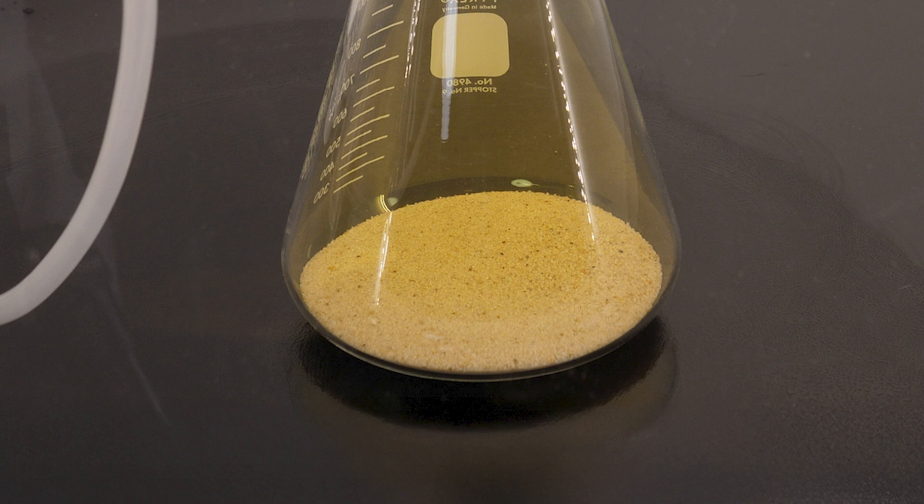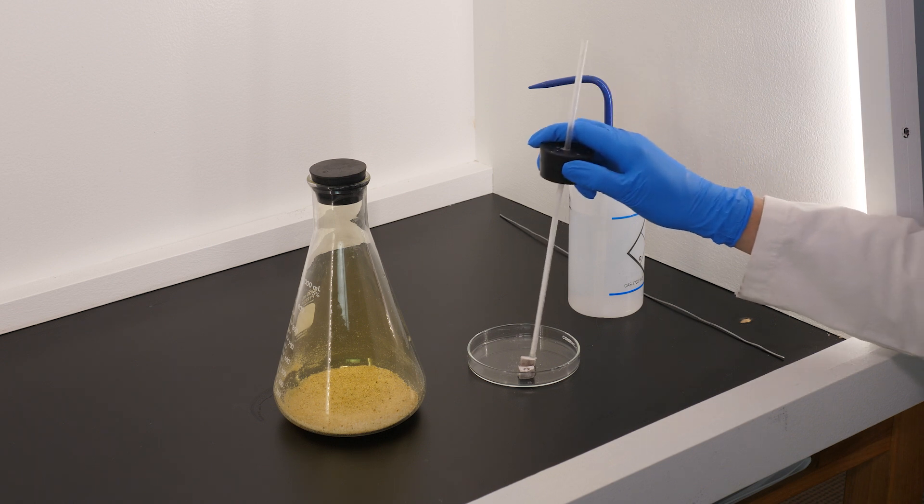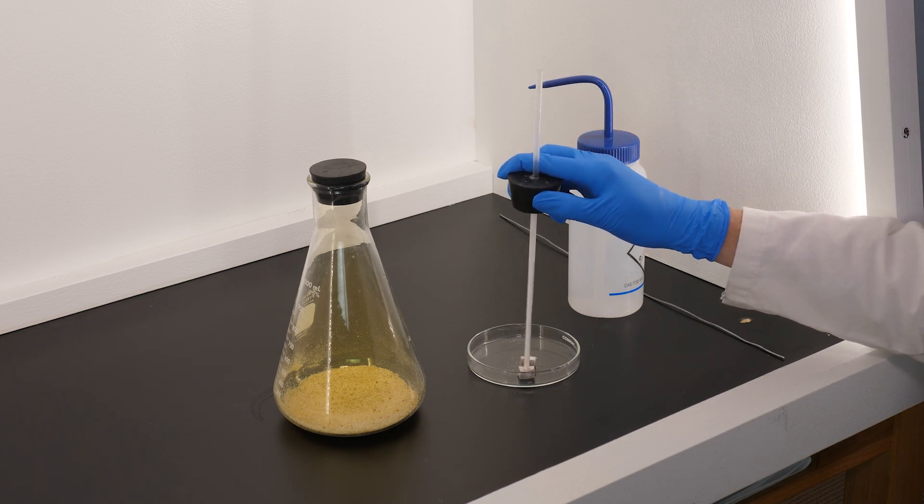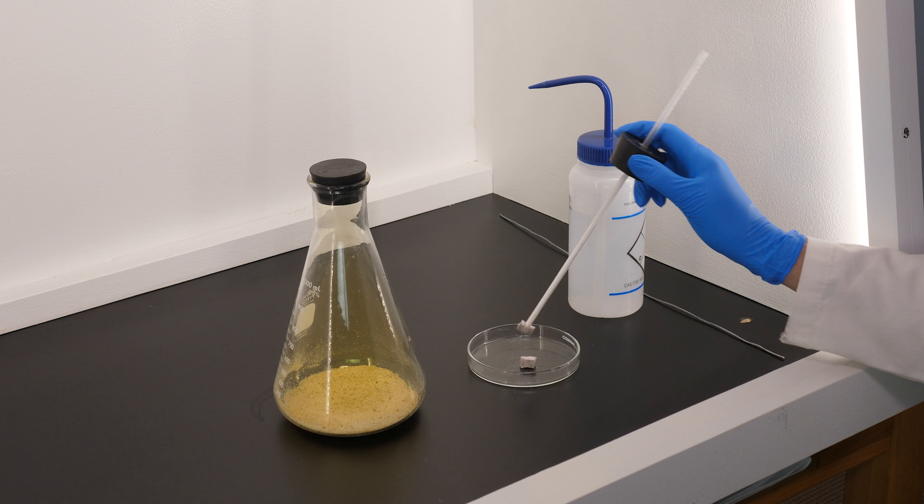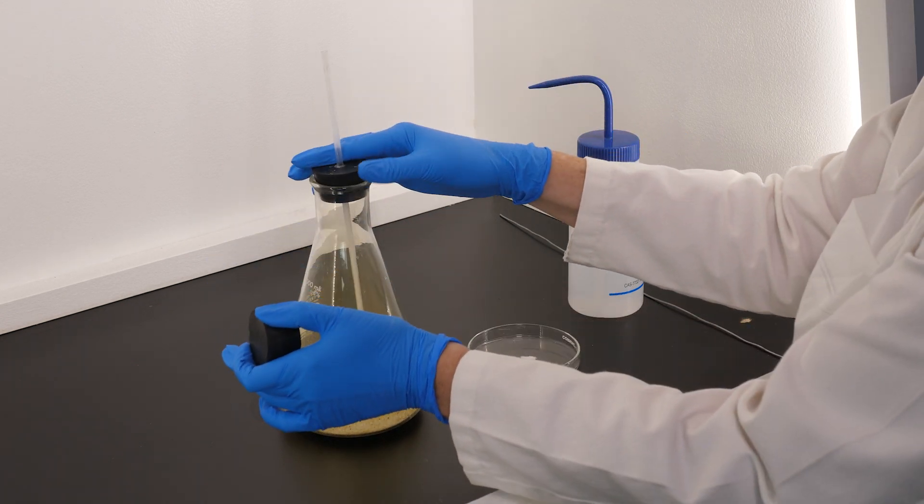Notice the sand in the bottom of the flask. During the reaction of sodium with chlorine, energy will be released in the form of heat. Sand has been added to the bottom of the flask to absorb some of the heat. Now, we will pick up a tiny piece of sodium with the glass tube. Since sodium is so soft, it will stick in the tube.